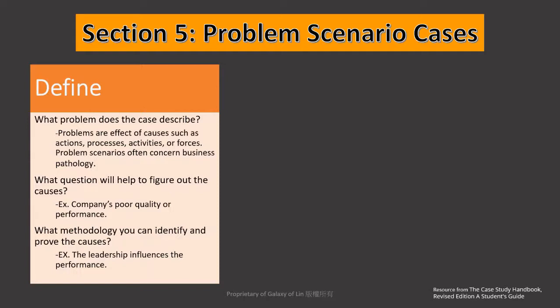The problem scenario case, compared to the decision making and evaluation scenario cases, is less clear to define and harder to find evidence to support your results. When you study your case there will be lots of content, and the problem scenario will be difficult to define because you can't easily find the answer. The most critical rule for defining a problem scenario is when the case tells you the business is not doing well or the performance is not good — that is a problem scenario case.